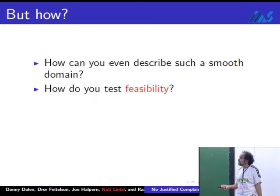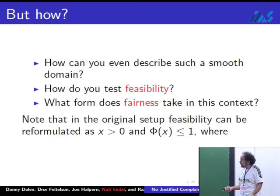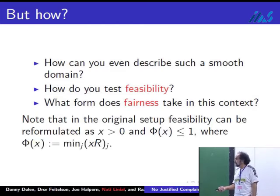Let me first raise the questions that come up. How do you even describe this domain Q? How do you test feasibility? What happens to fairness? Previously we said that fairness is determined by the set of facets in which your X lies. By the way, here this should be a max.